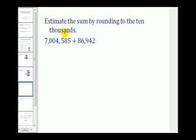On this example, we want to estimate the sum by rounding to the nearest ten thousands. We'll first identify the round off place value. That would be this zero and this eight. The digit to the right is our decision maker, which tells us to round up or round down. This four tells us to round down, so we don't change the zero. And everything to the right is replaced with zero, so this rounds to seven million.